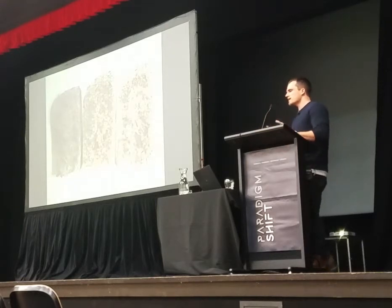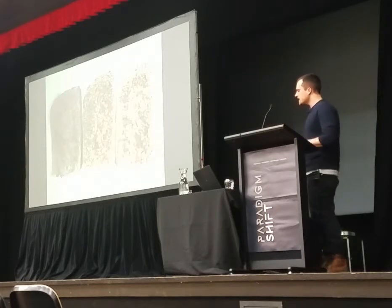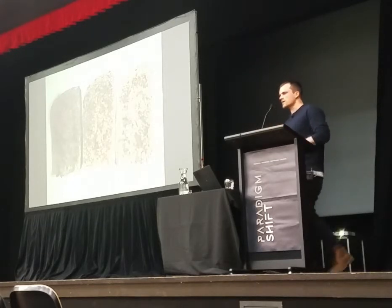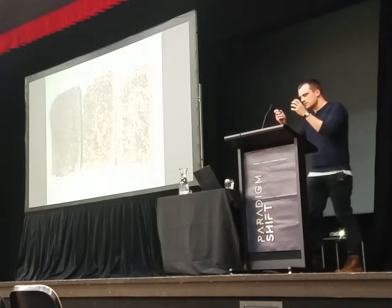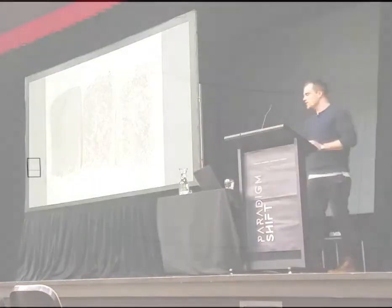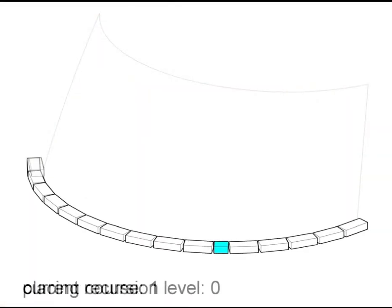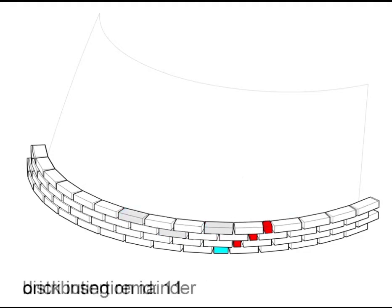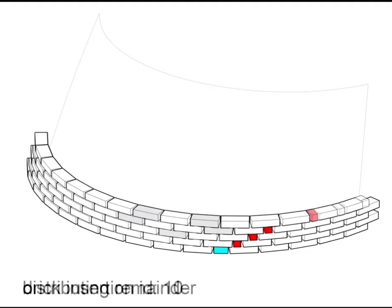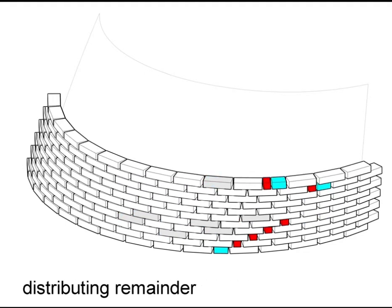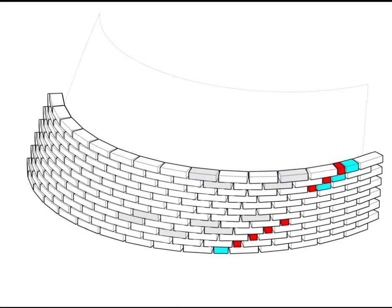We tried a lot of different things, but in the end what worked was a bottom-up system. Instead of deterministically telling the building how to compose itself, we let the bricks do it on their own. Here you see an animation of the brick-laying algorithm we developed. In this algorithm, the bricks have their own agency to build the structure.